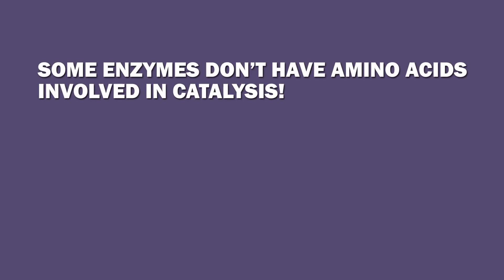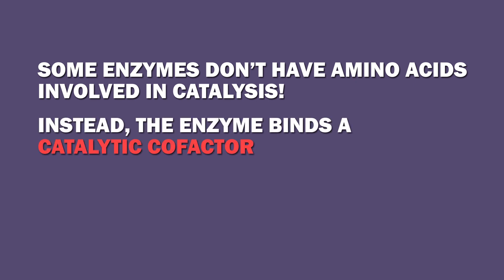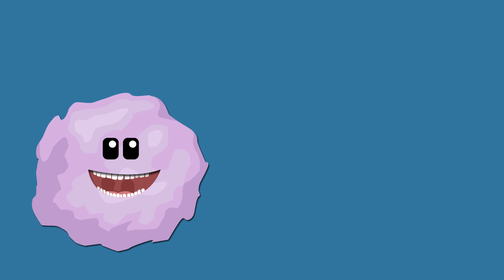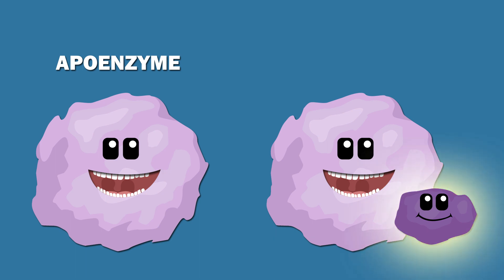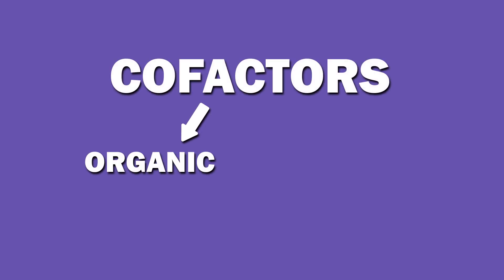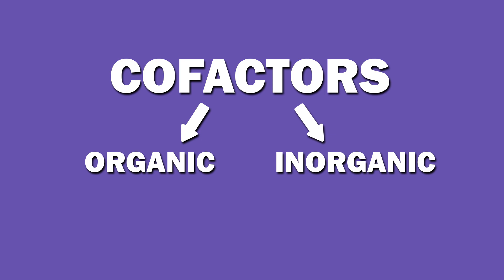There are some enzymes that don't have amino acids involved in catalysis. Instead, the enzyme binds a catalytic cofactor. Cofactors are non-protein chemical compounds or metallic ions. If an enzyme that requires a cofactor to function doesn't have one bound, it is called an apoenzyme or apoprotein. When bound to the cofactor, it is called a holoenzyme. Cofactors can be organic or inorganic, and allow enzyme active sites to be more versatile than if they were only composed of amino acids.